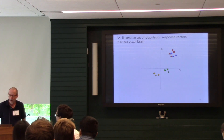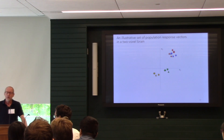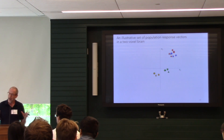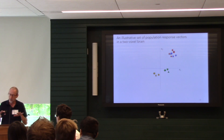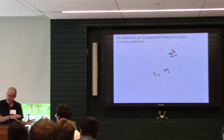Question from audience: Do all subjects have the same number of voxels in the area? Response: You can normalize them to a standard mesh, but you don't have to. It's actually pretty easy to go from one size cortical field to a different size cortical field on a different subject.